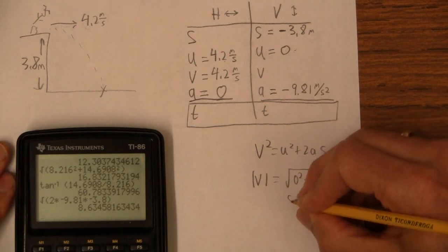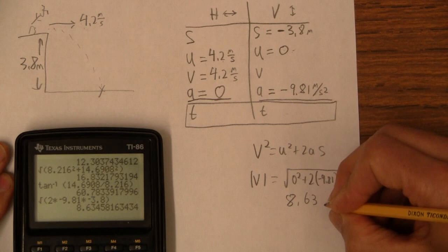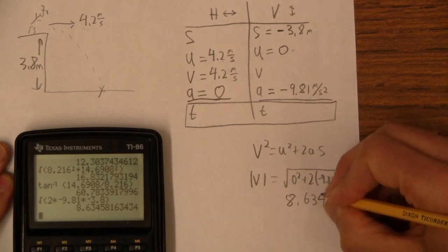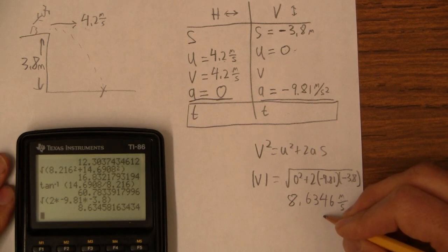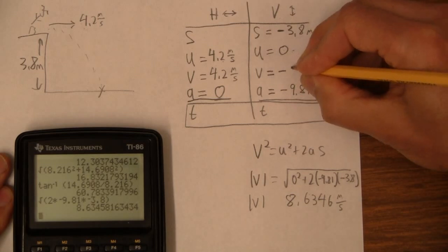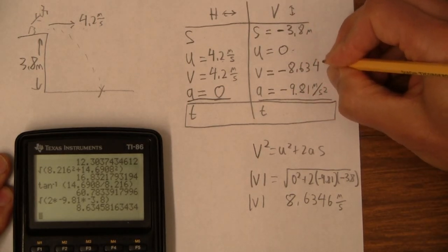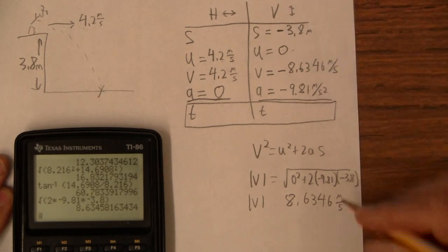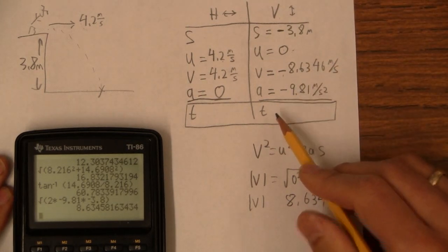Okay, so I get that the answer is 8.636346, I'll say. And I'm carrying some extra sig figs because I don't want to round. And that's the absolute value of V. I know he's going down, so I'm going to put negative 8.6346 meters per second there. Negative because he's going down.